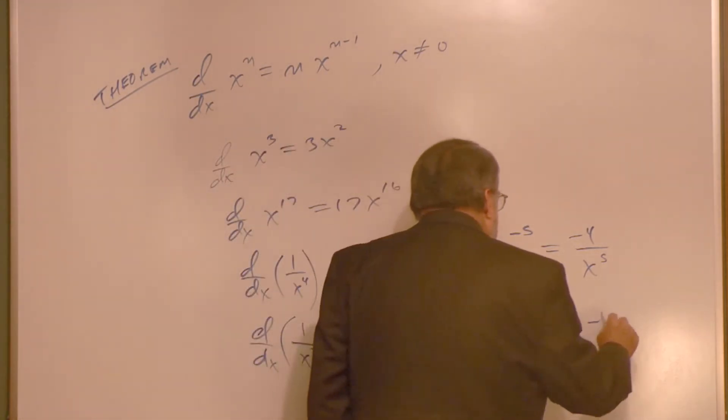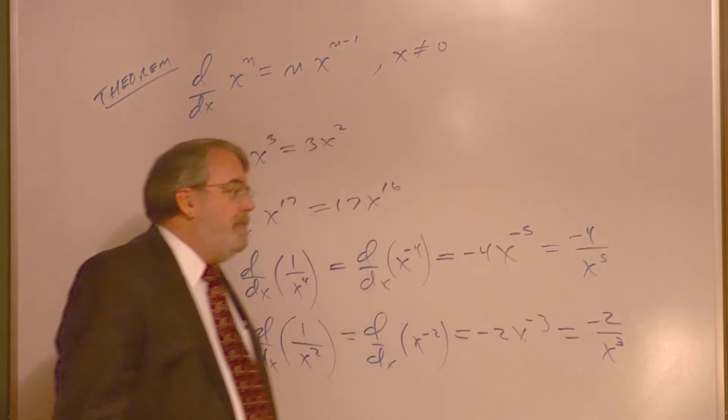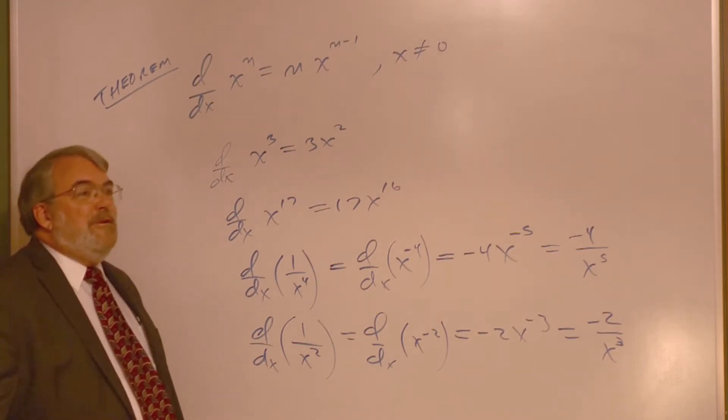And we end up with minus 2 over x to the third. So very nice when applied to polynomial terms.